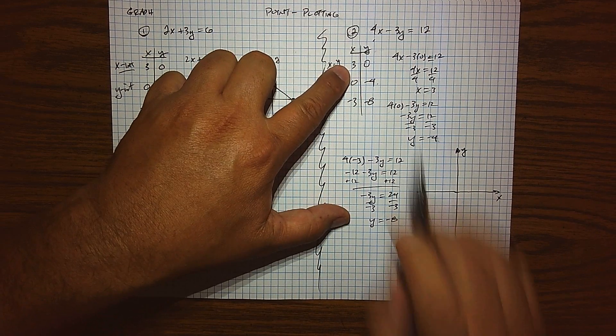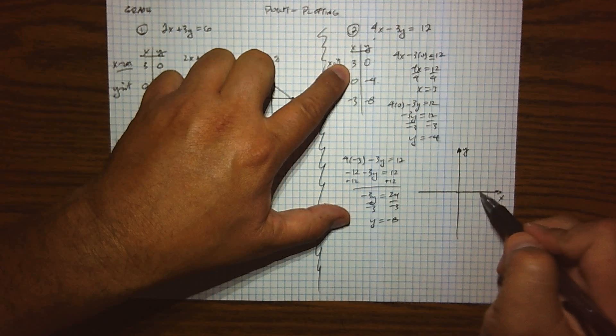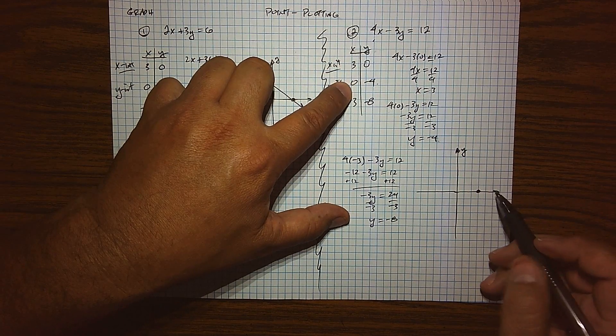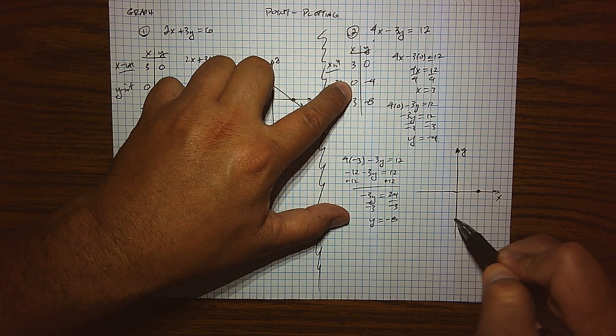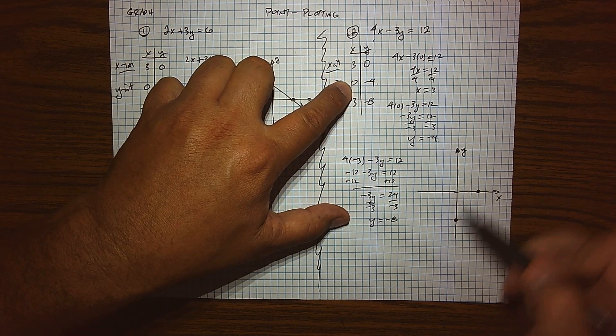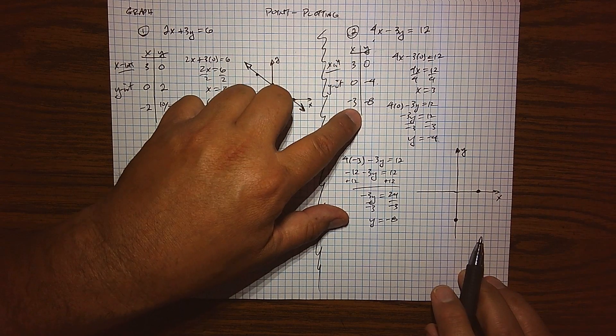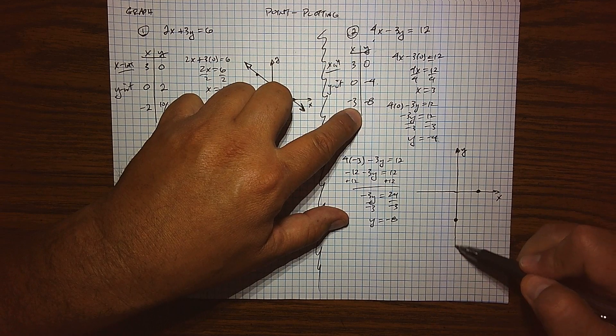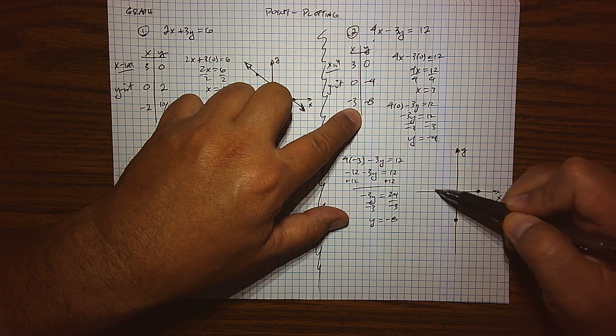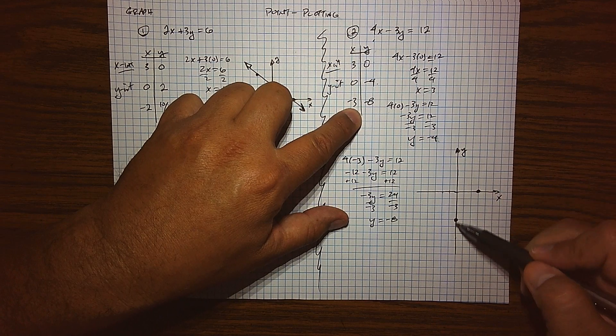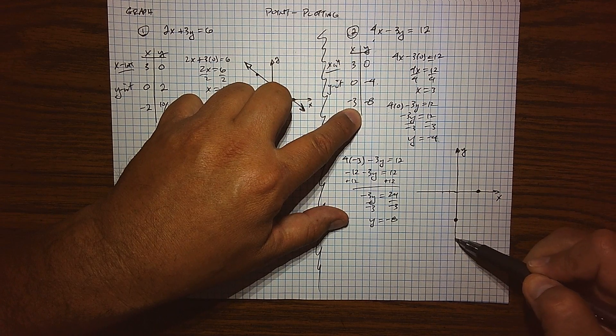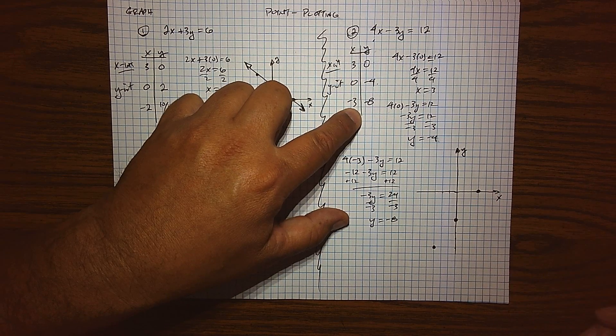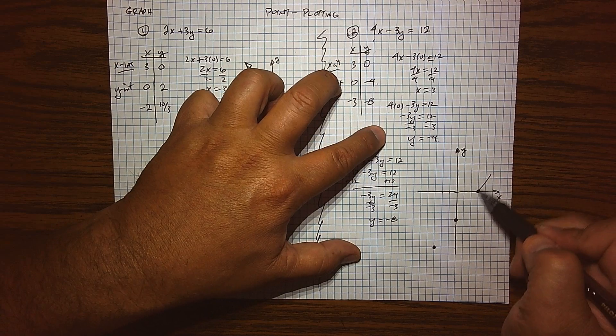This graph crosses the x-axis at 3, 0. So there's that visualization of that data. The y-intercept is occurring at 0, negative 4. And again, you can already start to see things line up, but if I can get a third point to line up, I know I've got it right. So this next point, x is equal to negative 3, and y is equal to negative 8. And lo and behold, you'll notice the data lines right up.